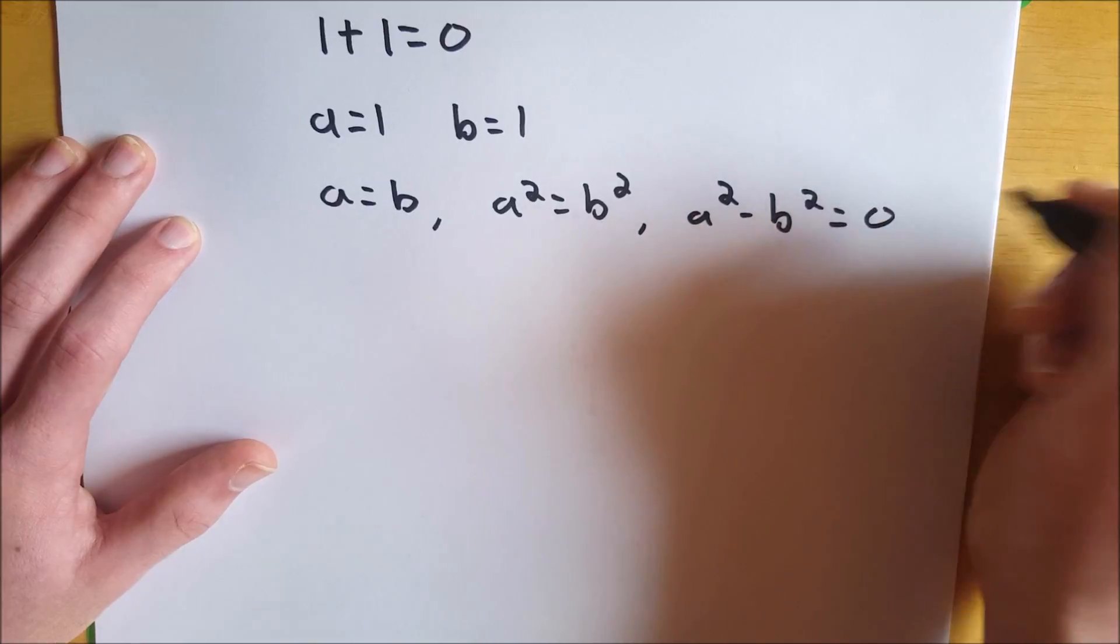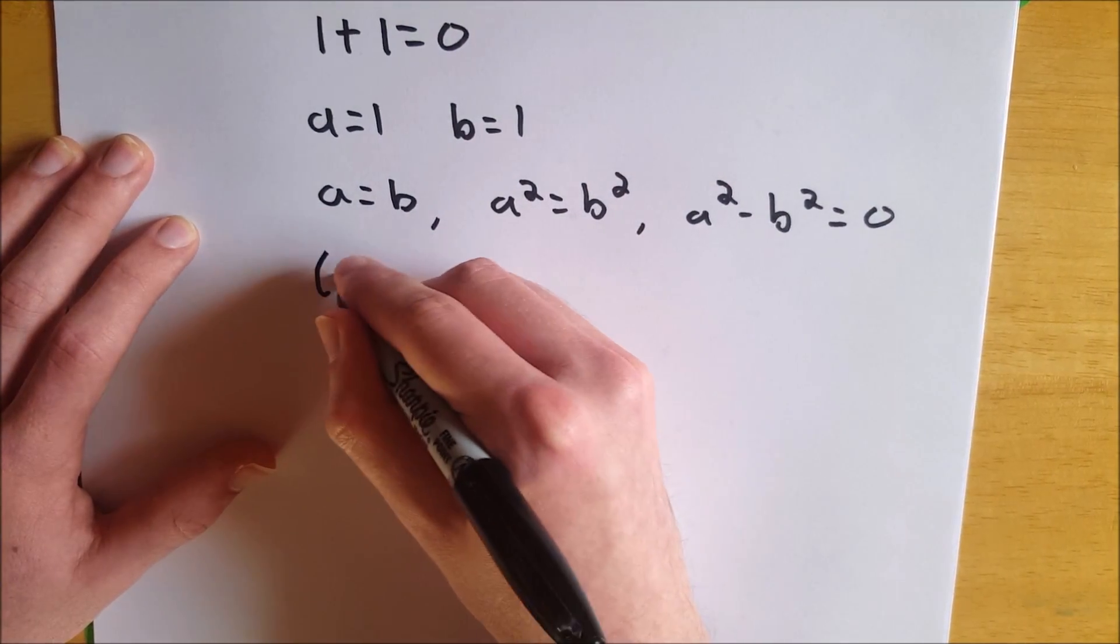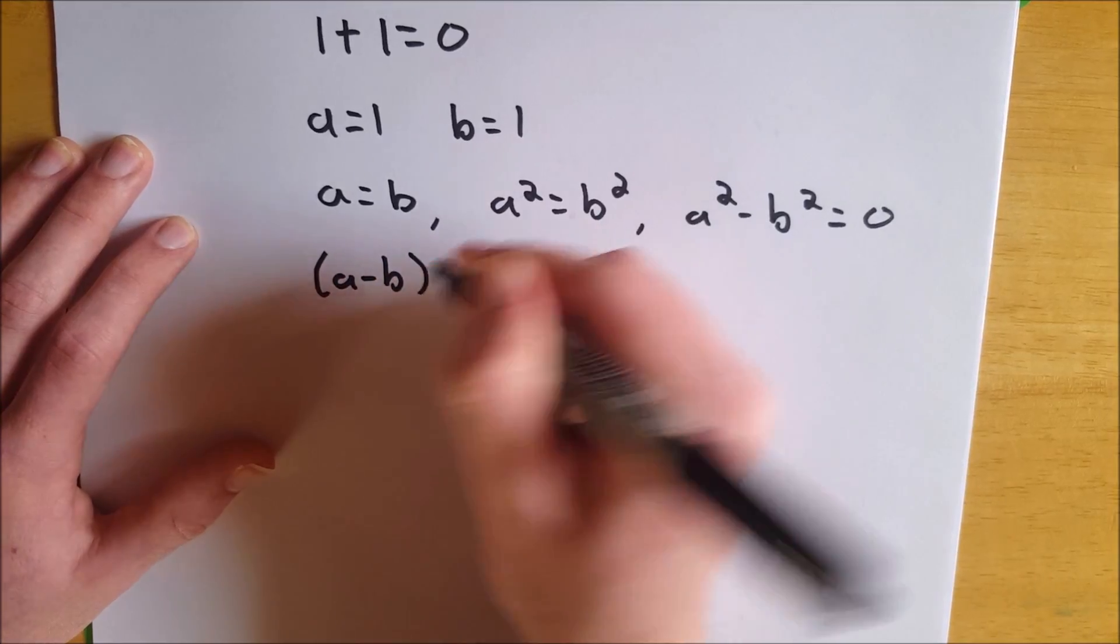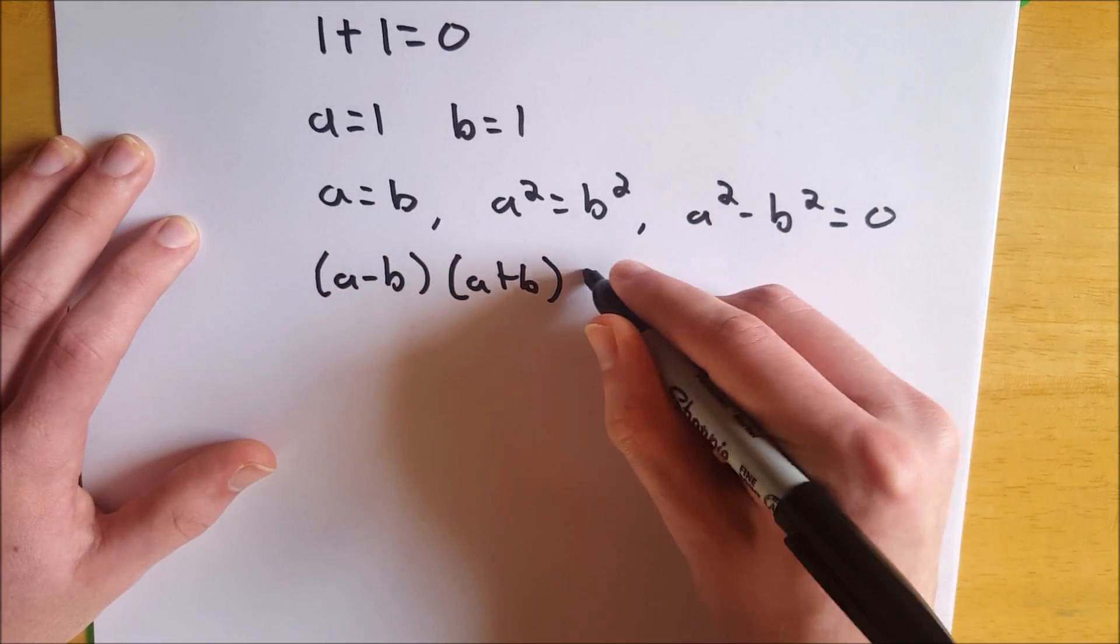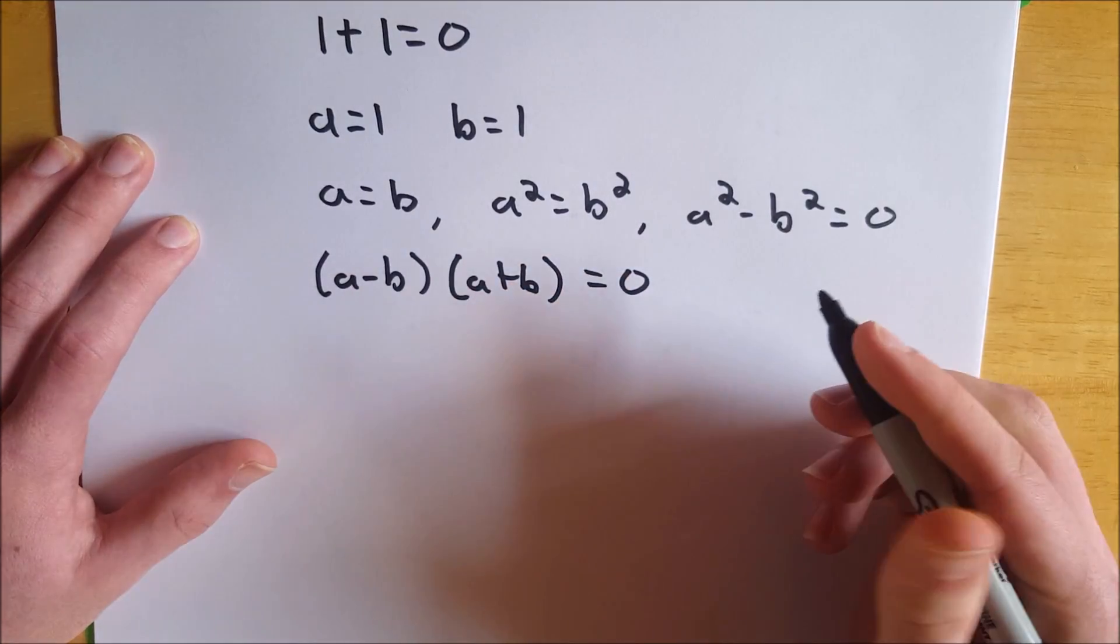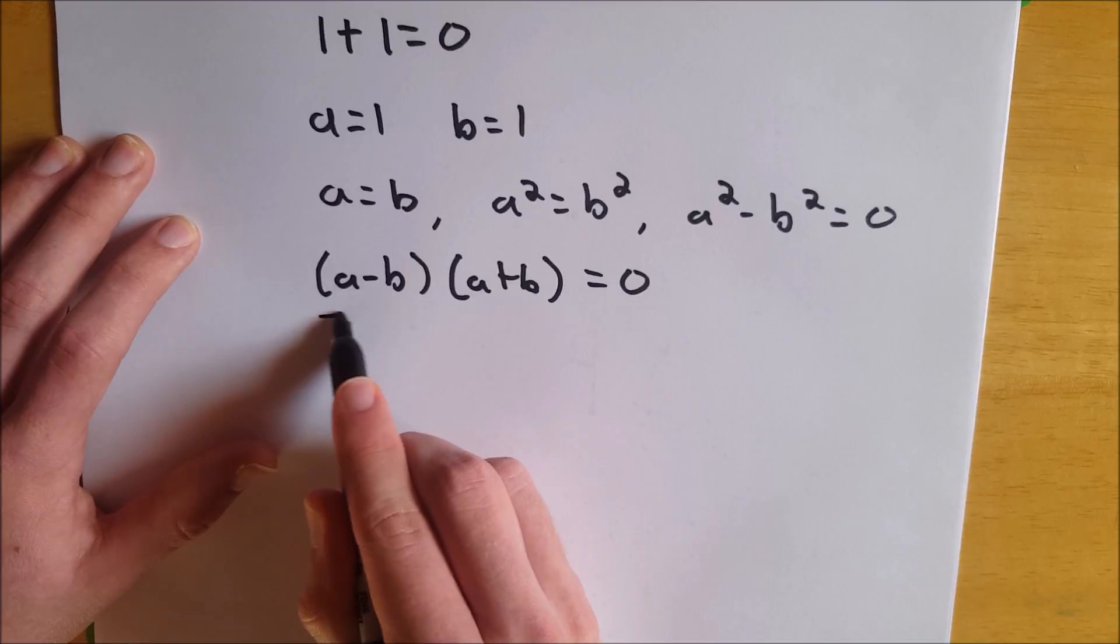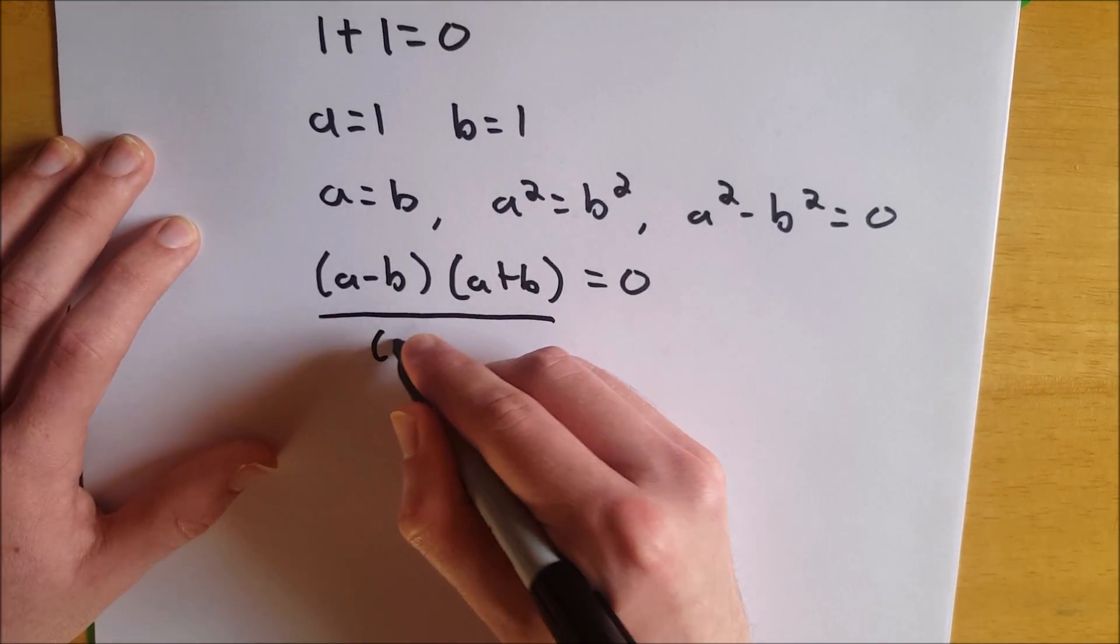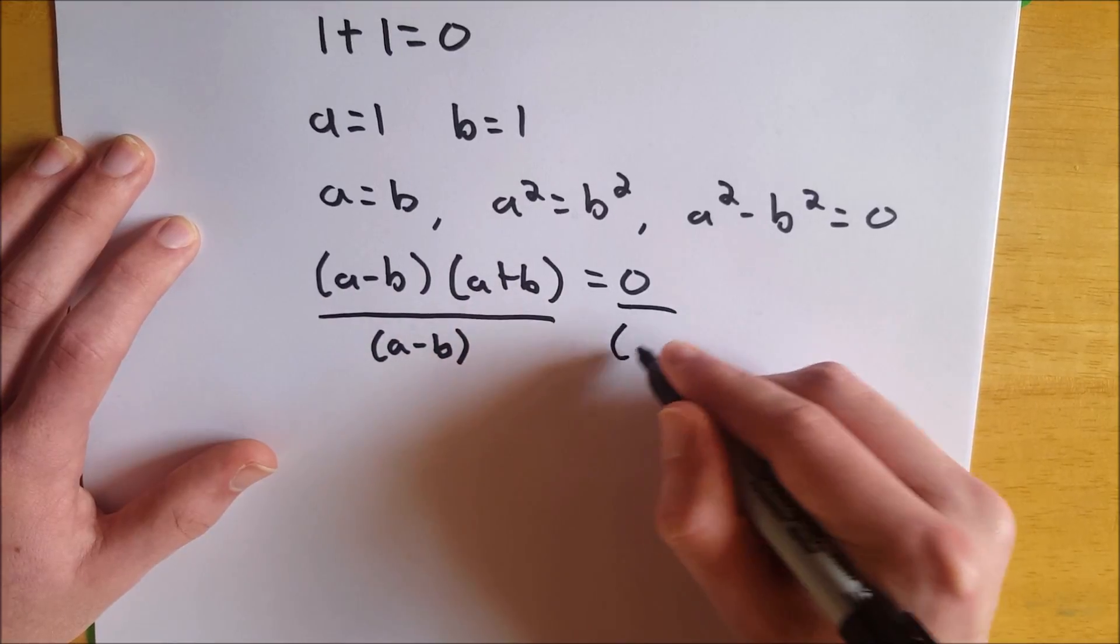Now we're going to subtract B squared from both sides, and that's going to give us A squared minus B squared equals 0. Now if we factorize this, that gives us A minus B multiplied by A plus B equals 0. And now we're going to divide both sides by A minus B.